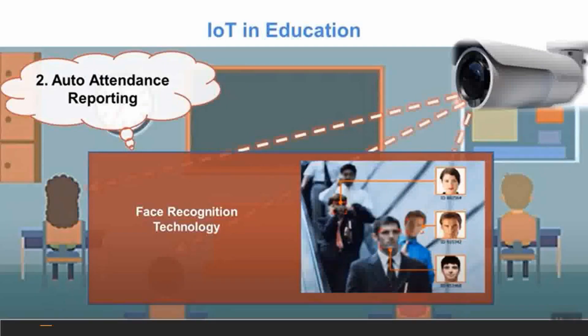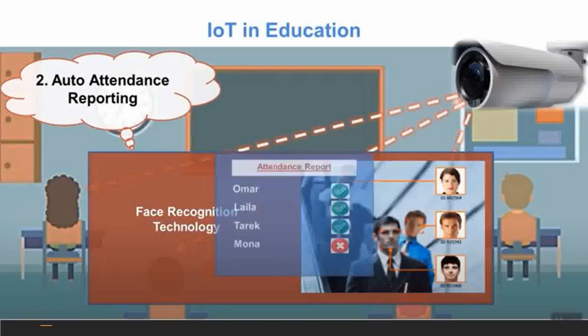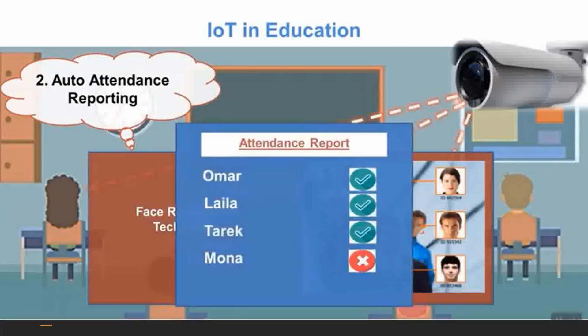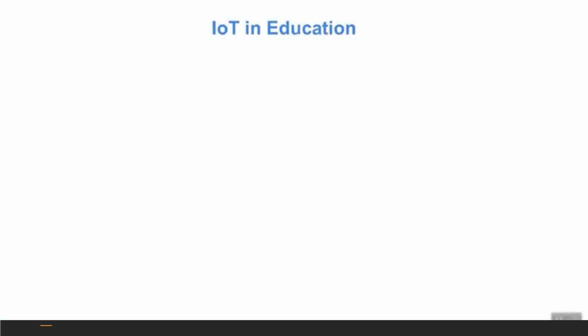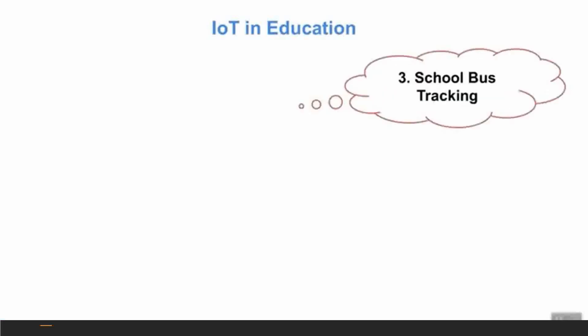Those sensors are used to manage daily attendance systems. With the help of face detection, data can be captured and used automatically. IoT also enables school bus tracking as one of its most important features.